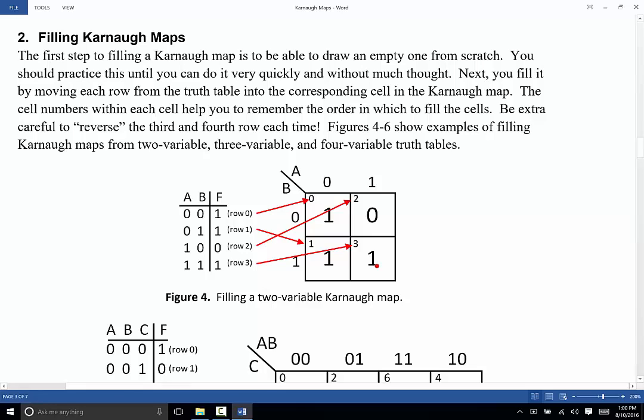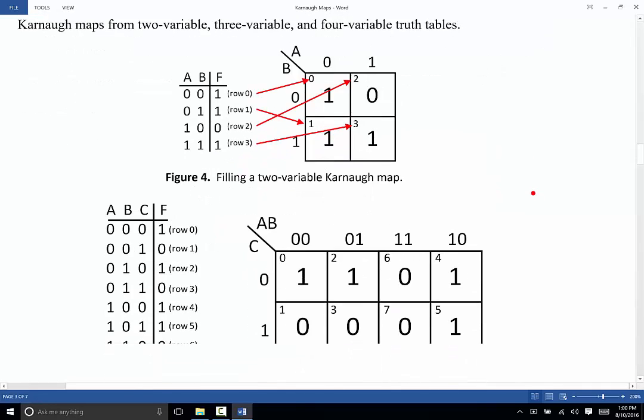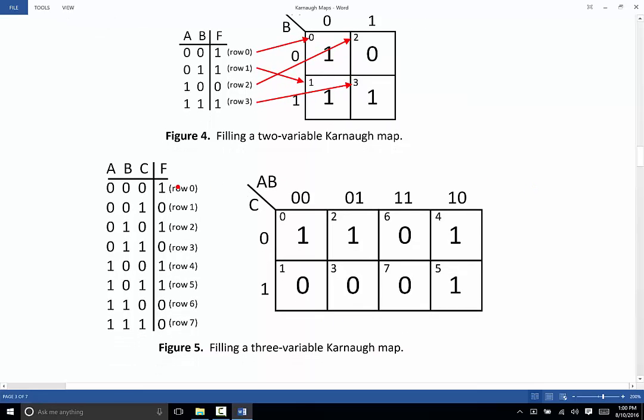Most of the time if a person makes a mistake using a Karnaugh Map in filling it in, it's either they've just accidentally miscopied a number or when you get to the larger ones, they've forgotten to skip or forgotten to swap the third and fourth rows or the third and fourth columns.